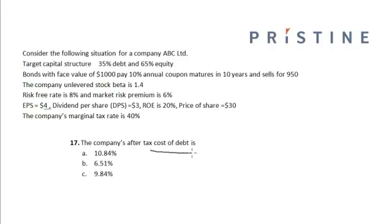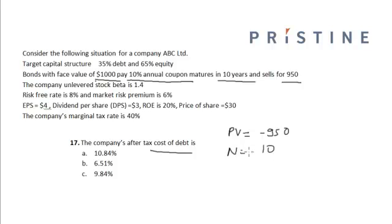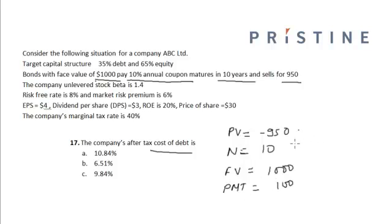The company's after-tax cost of debt: we have been given that the bonds with a face value of 10,000 pay a 10% annual coupon, mature in 10 years, and sell for $950. So the present value of the bond is minus 950. We put these values into the financial calculator: number of years equals 10, face value equals 1,000, and the coupon value equals 100. Calculating I/Y gives us 10.84 percent.